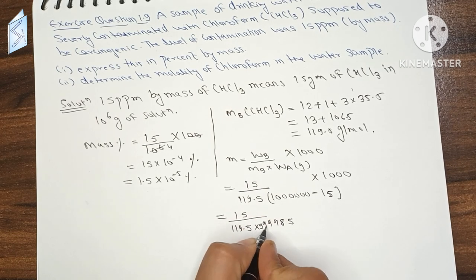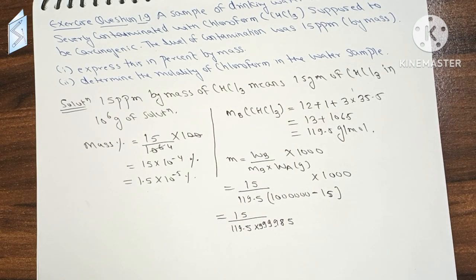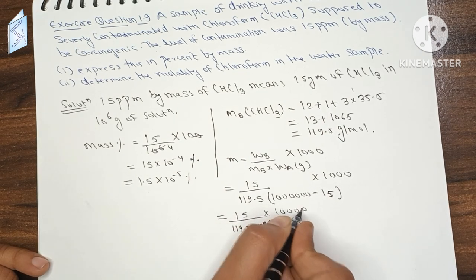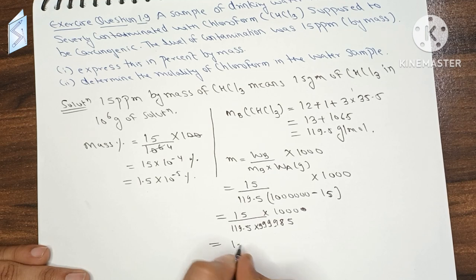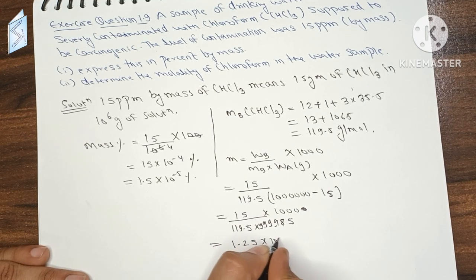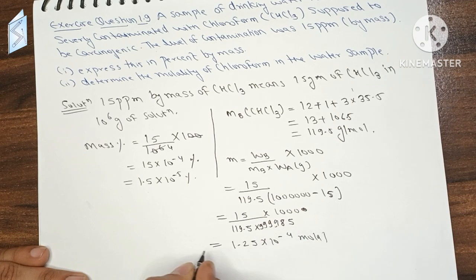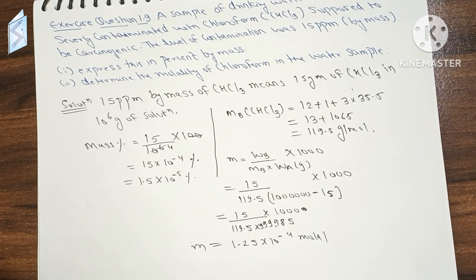Into 1000. Now if we solve this, we have the answer: 1.25 times 10 to the power minus 4 molar. This is our molality.